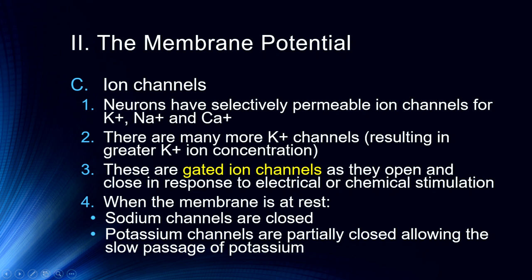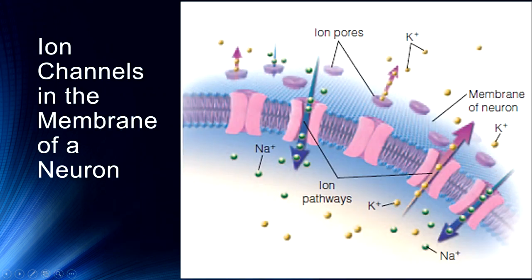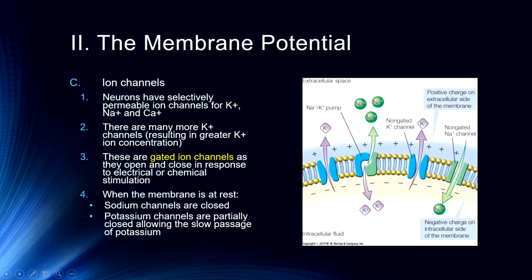Concentration gradients and electrical gradients together help maintain potassium equilibrium in addition to the sodium-potassium pump. We can see ion pores where sodium might be entering and potassium might be exiting or entering, passing through those channels across the phospholipid bilayer. In another view of this process, potassium ions are leaking out, there is a sodium channel as well, and the sodium-potassium pump is removing three sodium ions and moving in two potassium ions.